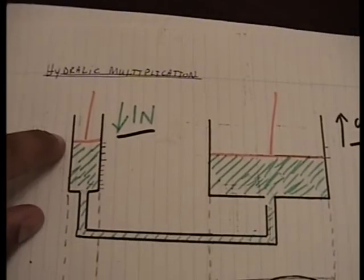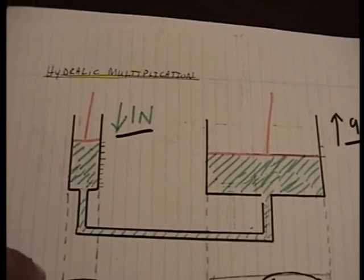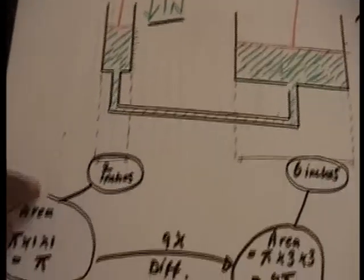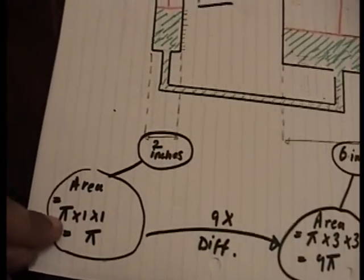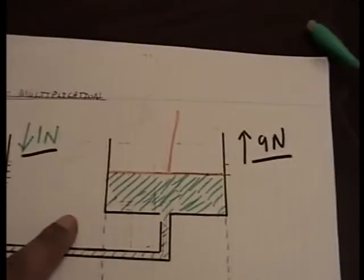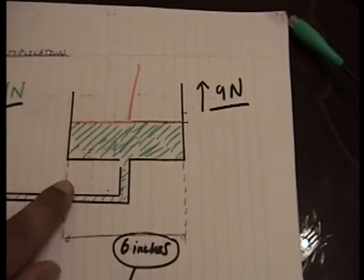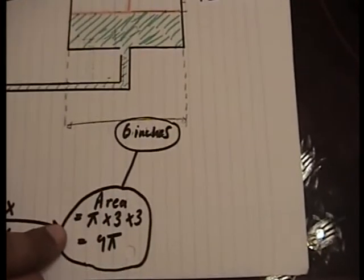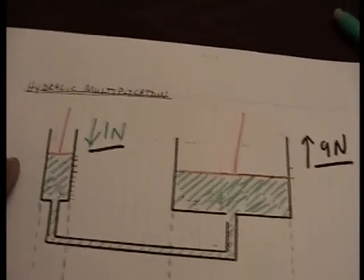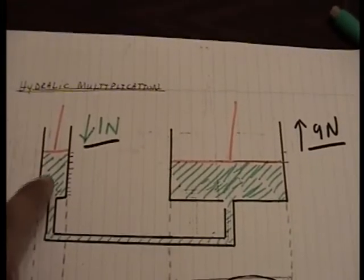This small piston has a diameter of 2 inches. The area therefore is pi. This big piston has a diameter of 6 inches. The area of this piston is therefore 9 pi. If you compare both these, this means that this has a ratio of 1 to 9.